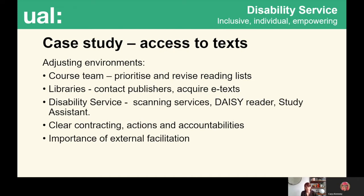I'm going to share an example from my own practice when I first realized the usefulness and power of taking a social model approach. It's 2010 and I've just started working at University of the Arts London. The university had been struggling to meet the needs of a blind student. The student was very dissatisfied and was taking a year out whilst the university made the texts for their course accessible to them. There was tension between the course team, the library, and the disability team about how to achieve this, and time was running out.